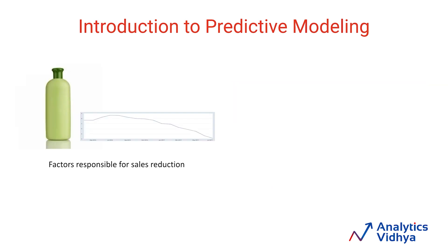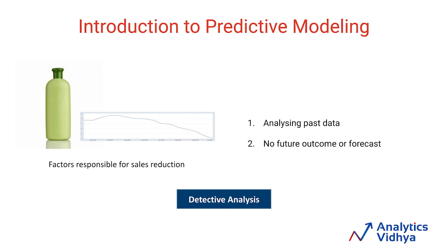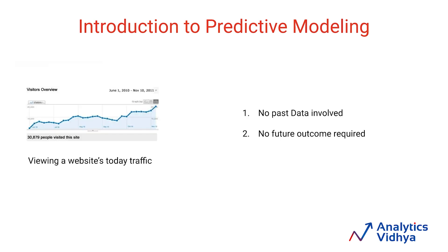Let's look at the second option: identifying the factors behind the sales of a shampoo product. Since identifying the factors involves analyzing past data without having to predict any future sales, this is not a predictive modeling task, but instead a detective analysis task. Similarly, viewing today's web traffic has nothing to do with the past and the future, so this is also not predictive modeling, but is actually just a dashboard.